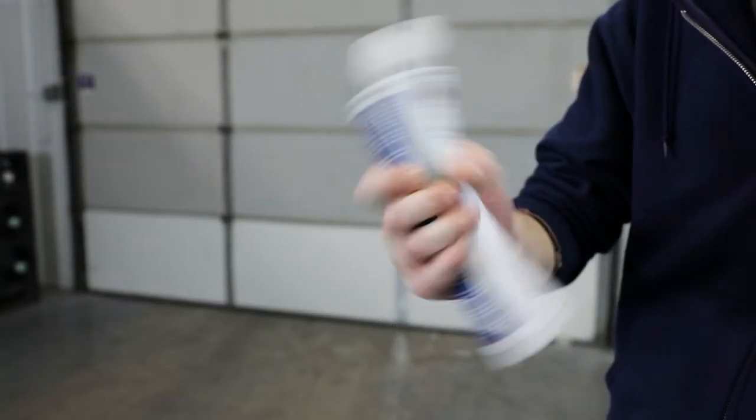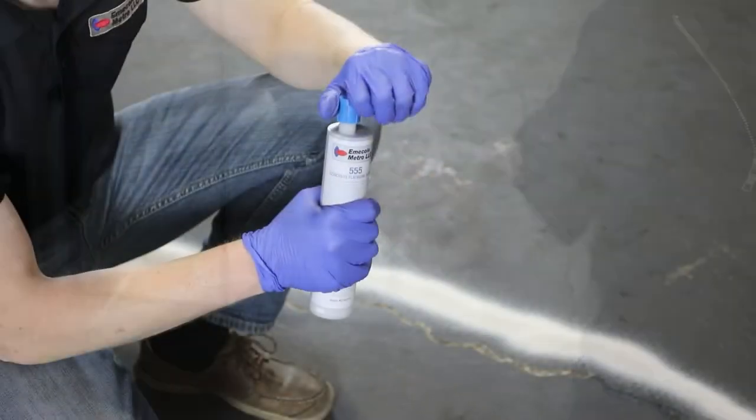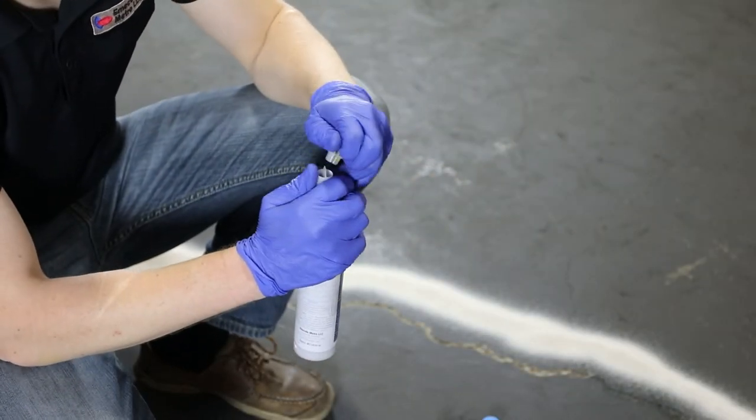To begin, shake the tube of 555 for 4 to 6 minutes. Remove the blue, then the white caps from the tube set.